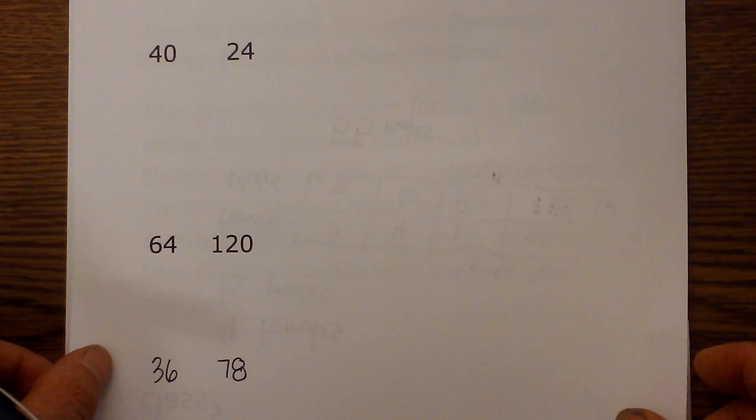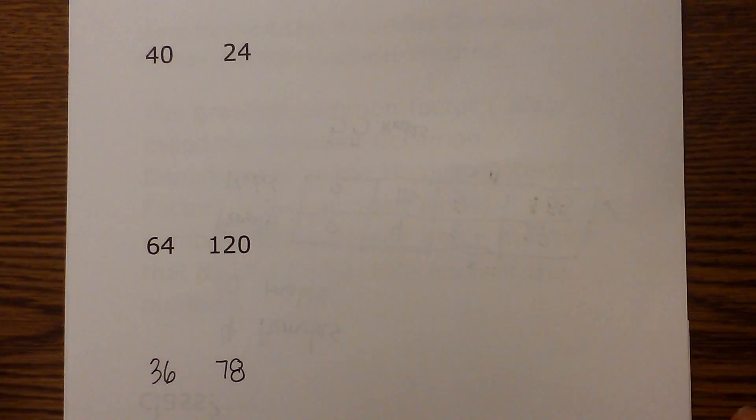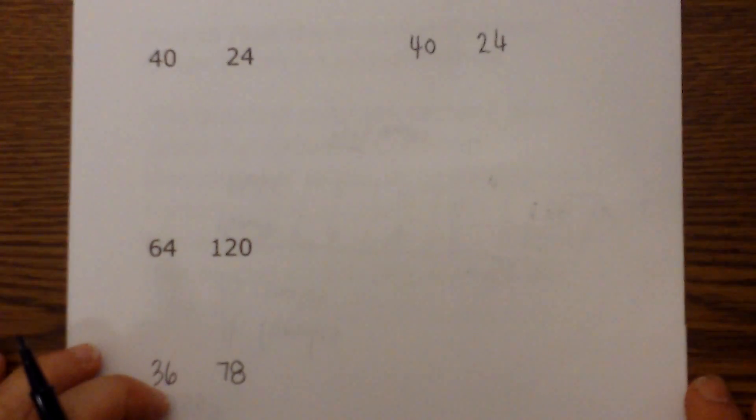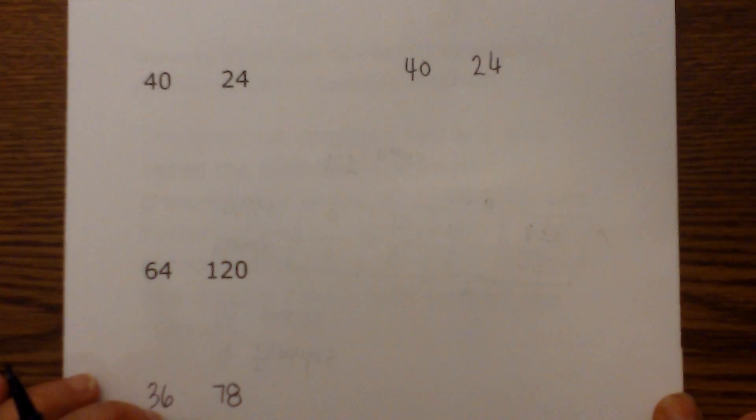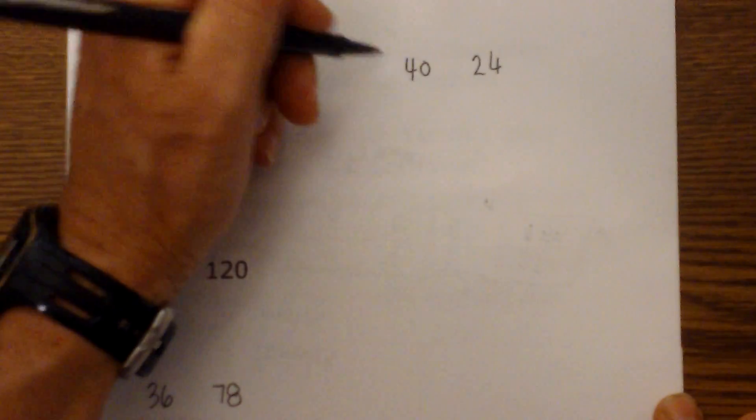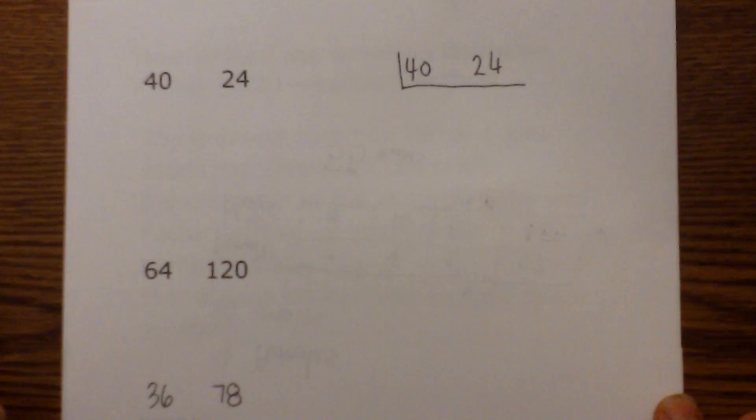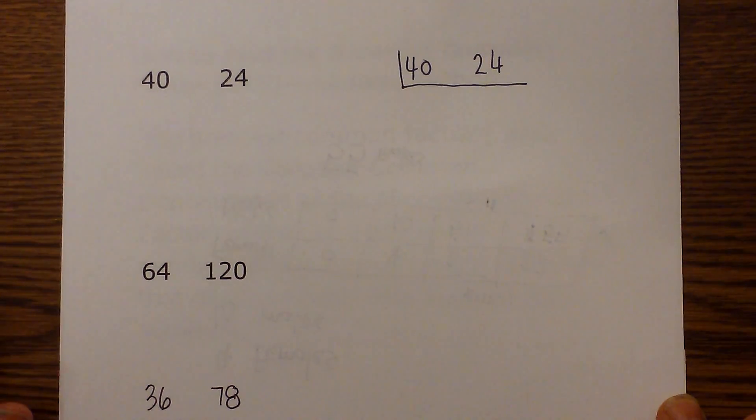First up, we have 40 and 24 and you want to find the greatest common factor or the greatest common denominator, which is the number that divides evenly into both of these. So the first thing I'm going to do is rewrite them over here so we can see it. We have 40 and 24 and you need to ask what number divides evenly into both of these. And this is where it's nice if you know your division rules, I'll leave a link for a video I created for those.